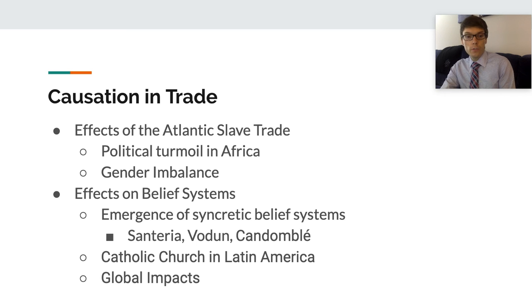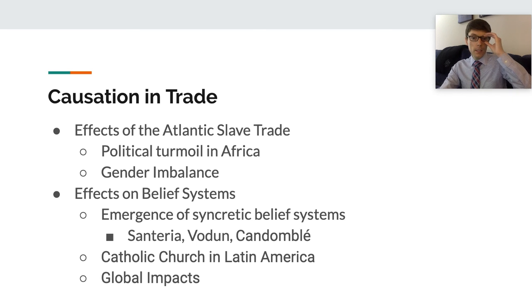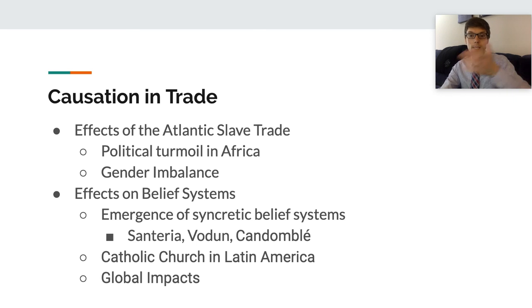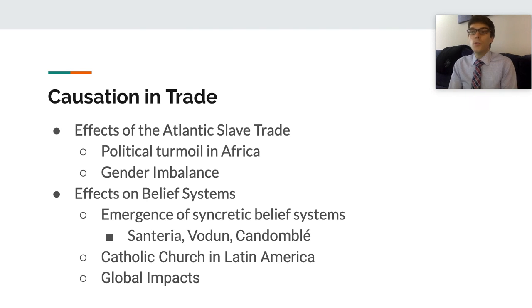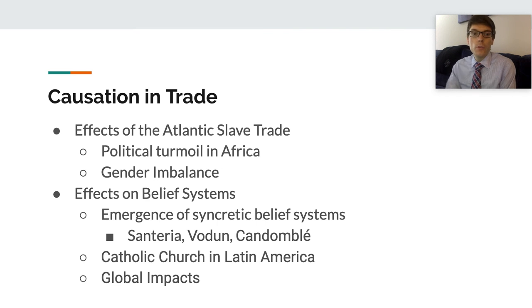The Columbian Exchange also brought the introduction of new crops to Africa — just as new crops came to Europe. Maize, corn, peanuts, and cassava became staples in the African diet, and this helped generate some new population growth.